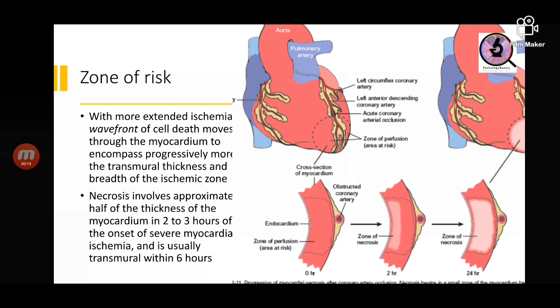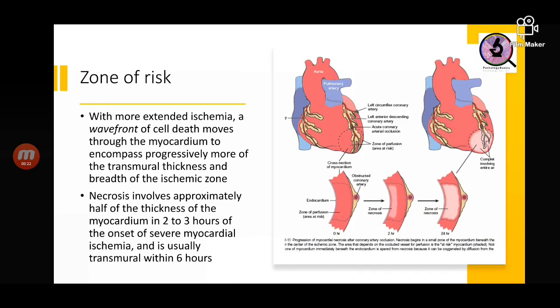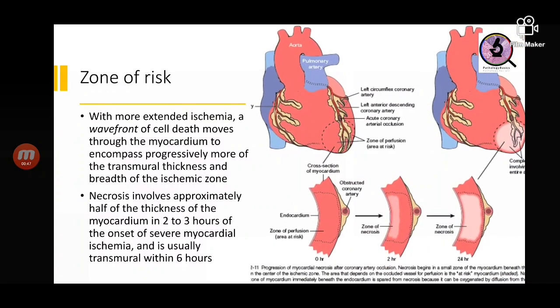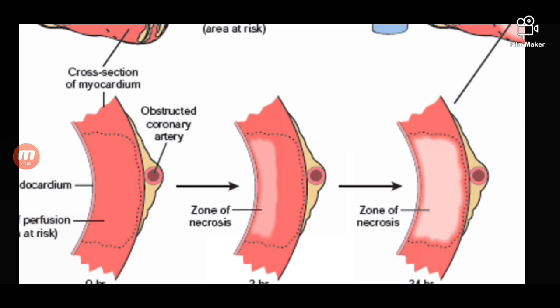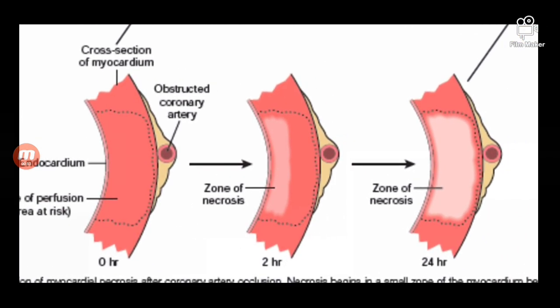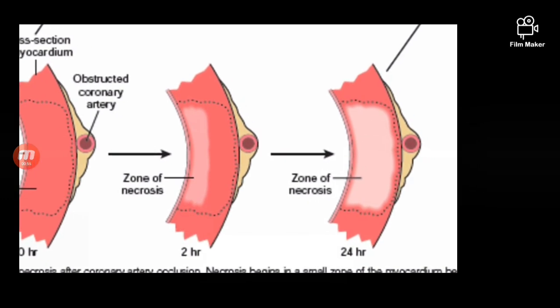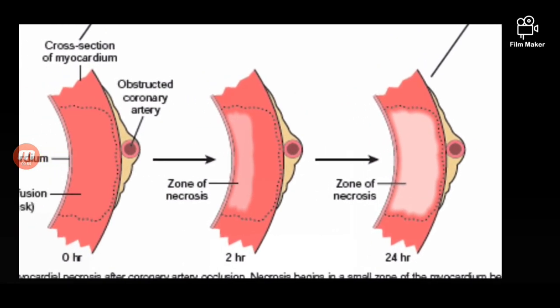As ischemia progresses, the infarction moves through the myocardium in the form of a wavefront, involving more and more of the myocardium. It becomes transmural — nearly half the thickness of the myocardium is infarcted within two to three hours of ischemia onset, and within six hours it becomes fully transmural. Within two hours there is a subendocardial infarct, and within 24 hours it has become transmural.